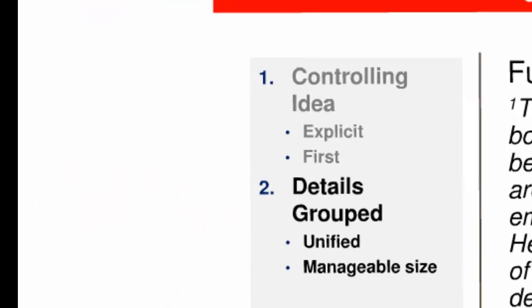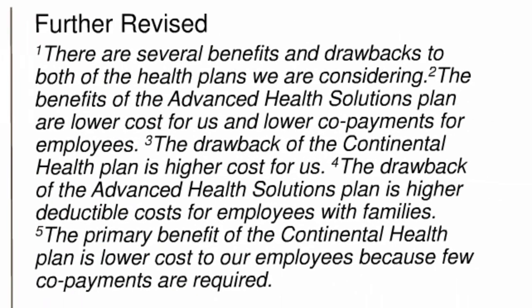The second principle you need to understand to create unified paragraphs involves grouping details. Consider the memo to the business partner about health insurance options again, this time with the sentences numbered. Think about how the writer could further increase the unity of this passage. Sentence 1 provides the controlling idea — benefits and drawbacks to two plans. Take a minute to inspect the other four sentences to determine whether they all belong in a group of sentences controlled by sentence 1. You should recognize that sentences 2 through 5 do fall within the controlling idea — they're all about pros and cons of the two plans, so they do all belong in a single paragraph. The fact that sentences 1 through 5 create a paragraph of manageable size means there's no need to split them into multiple paragraphs.